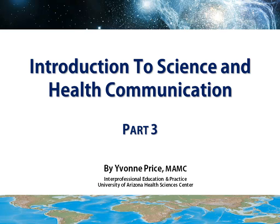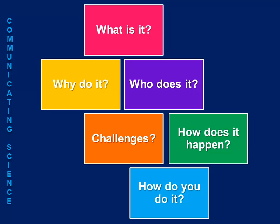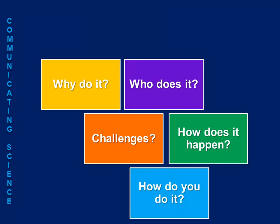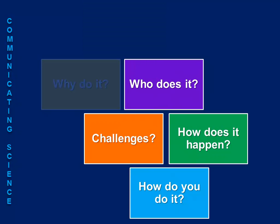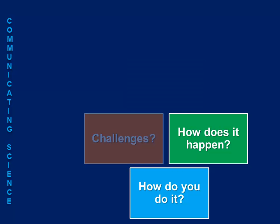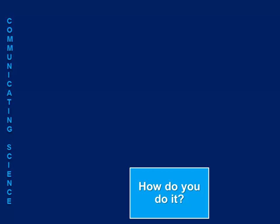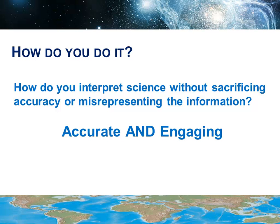Welcome to Introduction to Science and Health Communication, Part 3. We only have one topic left to cover in Part 3: how do you do it? We're going to take a look at some of the best practices for effectively communicating science and health. How do you make it accurate and engaging? How do you interpret science without sacrificing accuracy or misrepresenting the information? Making something accurate and engaging can be very challenging, particularly with science and health topics, which tend to be complex and unfamiliar to the general public.